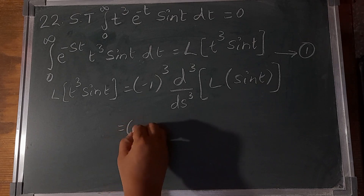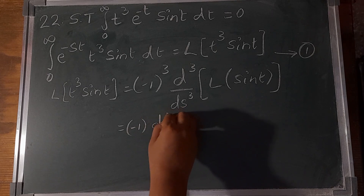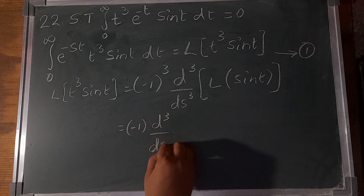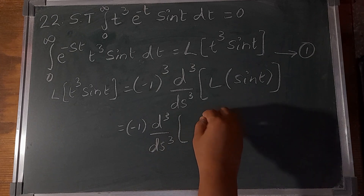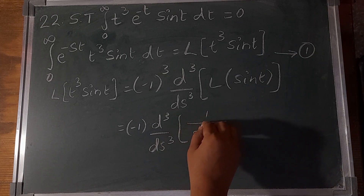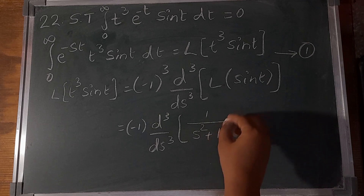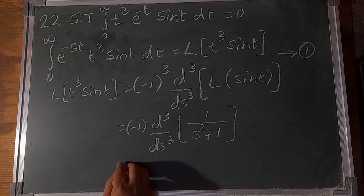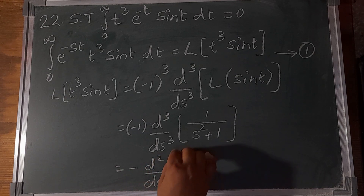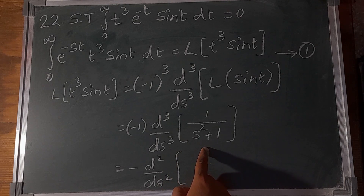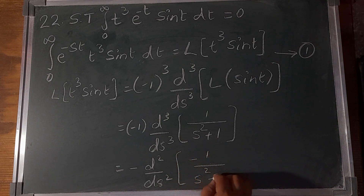(-1)³ equals -1, so we take the third derivative with respect to s. The Laplace transform of sin(t) is 1/(s² + 1). Taking the first differentiation gives -1/(s² + 1)².